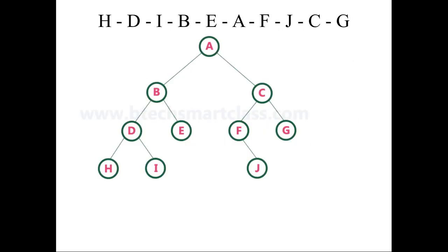We will see one example so that you will understand. I have taken one example which has 10 nodes. This binary tree has been given to create a threaded binary tree, and I have given the order of inorder traversal. Let me explain how you have to write the inorder traversal. A is the root node. In inorder traversal you have to write the left node, then root node, then right node.